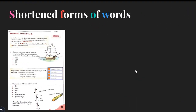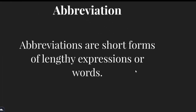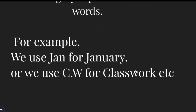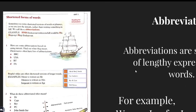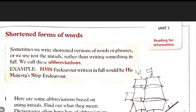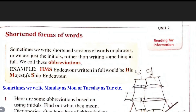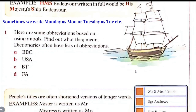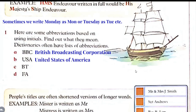Shortened forms of words — abbreviations. Abbreviations are short forms of lengthy expressions or words. For example, we use 'Jan' for January or 'CW' for classwork. In daily routine we use a lot of words in short form. Find the full variant of these abbreviations using the internet or a dictionary. BBC stands for British Broadcasting Corporation. USA stands for United States of America. BT stands for British Telecom. FA stands for Faculty of Arts or Fine Arts.